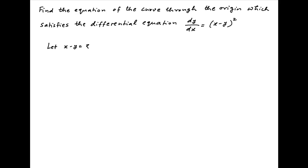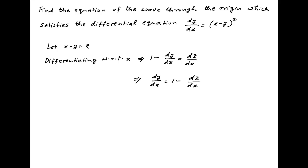We start by putting x minus y equal to z. Taking the derivative of both sides with respect to x, we get 1 minus dy/dx is equal to dz/dx, which implies that dy/dx is equal to 1 minus dz/dx.